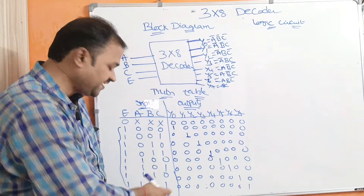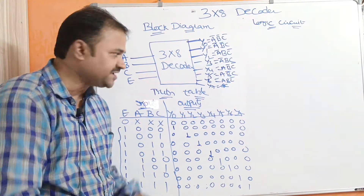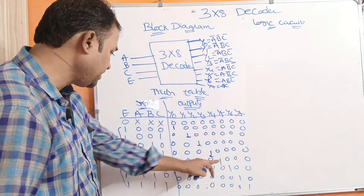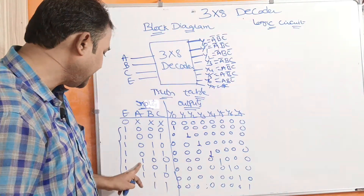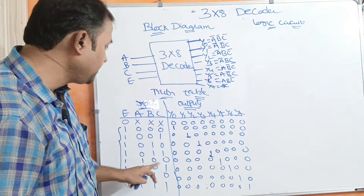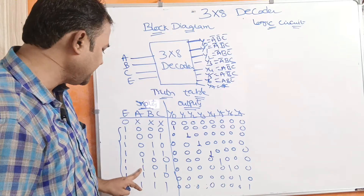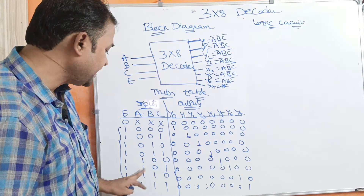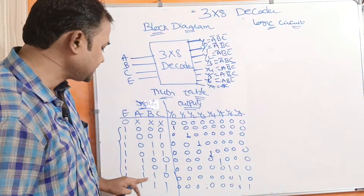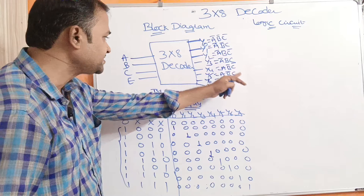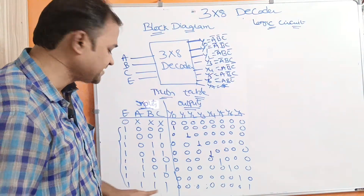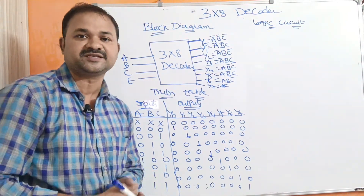Likewise we can write the remaining combinations. Y4 equals A B bar C bar. Next Y5 equals A B bar C. Y6 equals A B C bar. Y7 equals A B C.